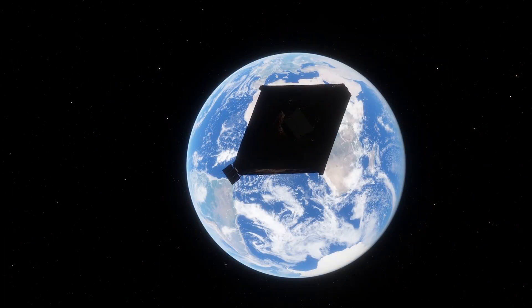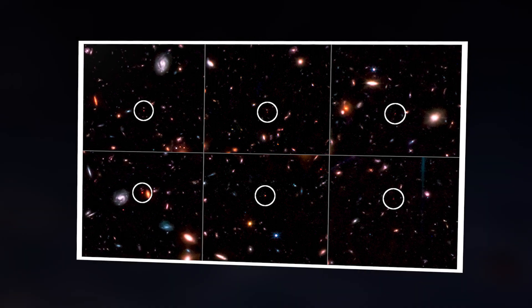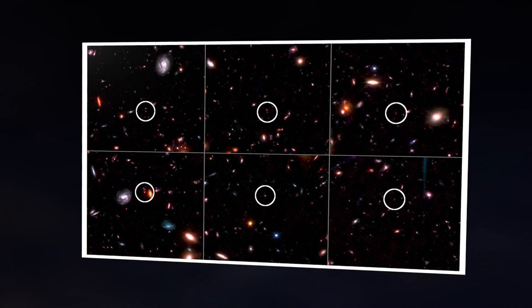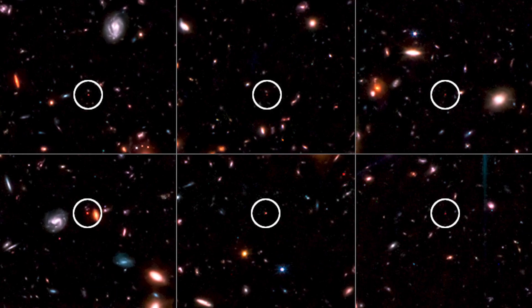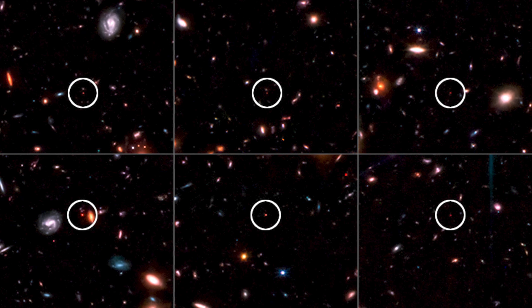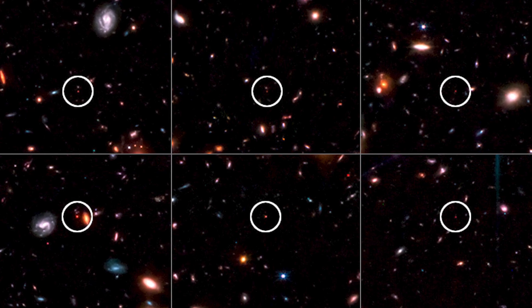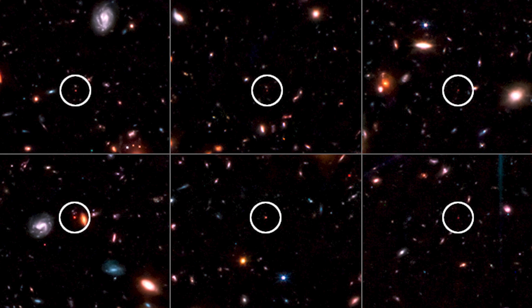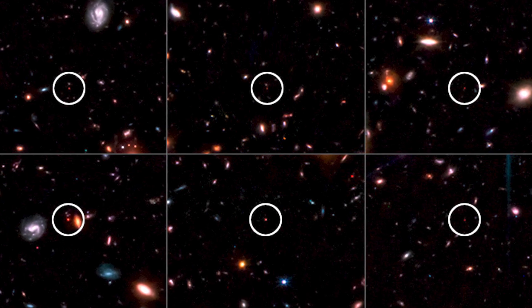JWST has identified six galaxies that exist a billion years after the Big Bang and ten times larger than the Milky Way galaxy. This is astonishing, since it normally takes billions of years to create a galaxy like ours, with hundreds of billions of stars. The James Webb Space telescope is challenging our preconceptions and making scientists reconsider the origin of the universe.